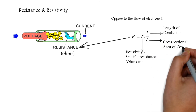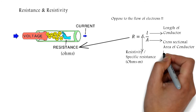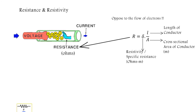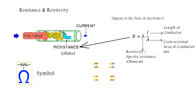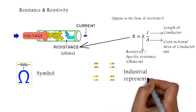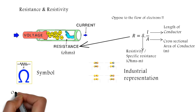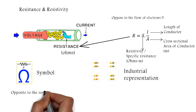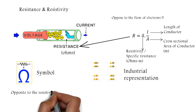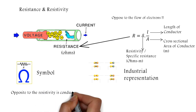A is the cross-sectional area expressed in square meters. This is the symbolic representation of resistance as used in circuit diagrams, and this is the actual or industrial representation of resistance. The opposite of resistivity is conductivity.